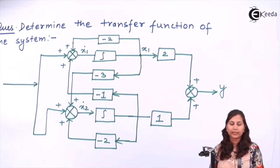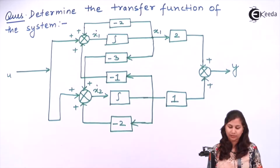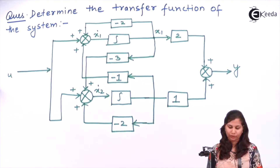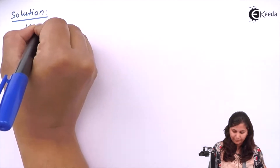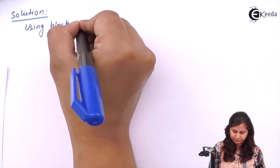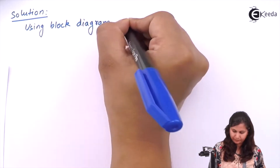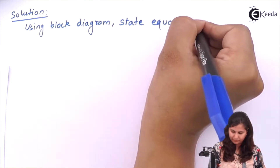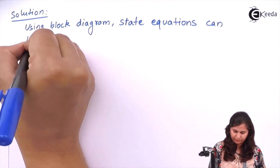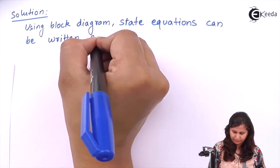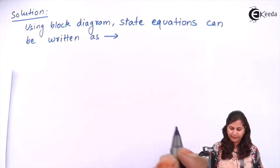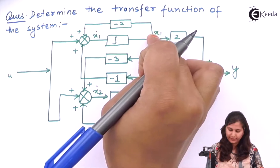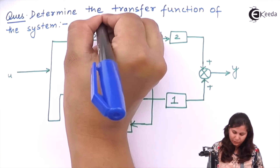First, using this block diagram, we will write the state equations. The first state equation will be x1_dot and the second state equation will be for x2_dot. Using the block diagram, the state equations can be written as: x1_dot equals — we have minus 2, this is x1, so what will come here is minus 2·x1.